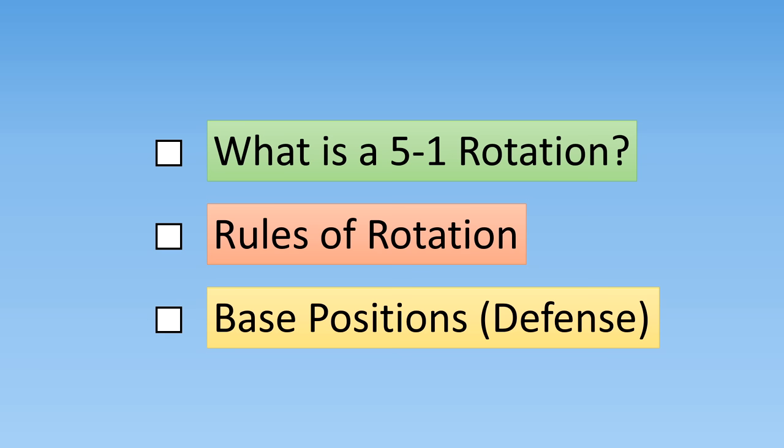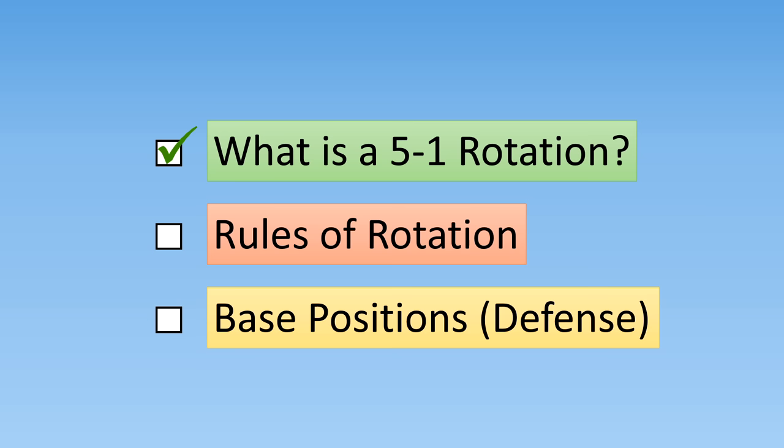Let's have a brief recap of what we've covered so far. A 5-1 rotation is one in which you have five hitters and one setter. We've covered the rules of rotation, which state that you can't cross past the players next to you. And we've also covered the concept of getting to your base positions as soon as the ball crosses the net.